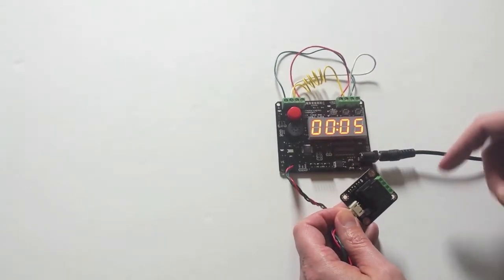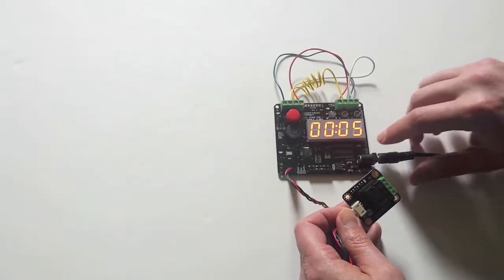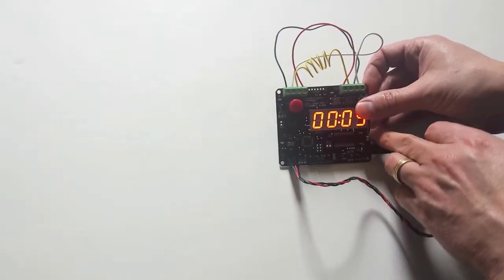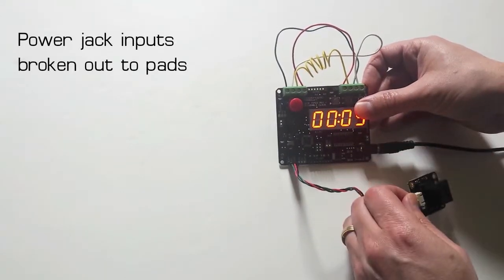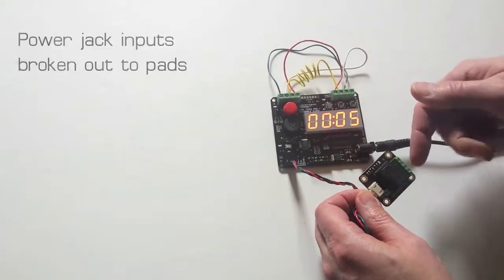If your external device can be powered from nine volts, there's connectors here just above the power jack that you can use to provide power to your device.